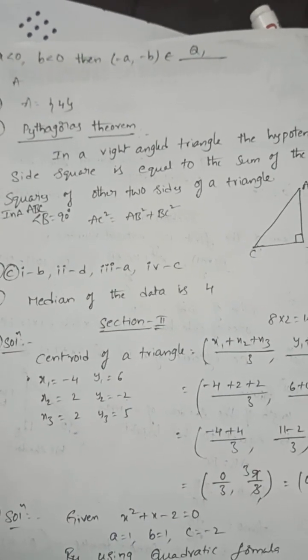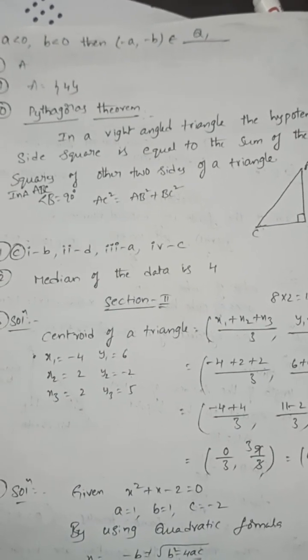Pythagorean theorem: In a right angle triangle, the hypotenuse side square is equal to the sum of the squares of the other two sides. So in triangle ABC where B is 90°, AC² = AB² + BC².